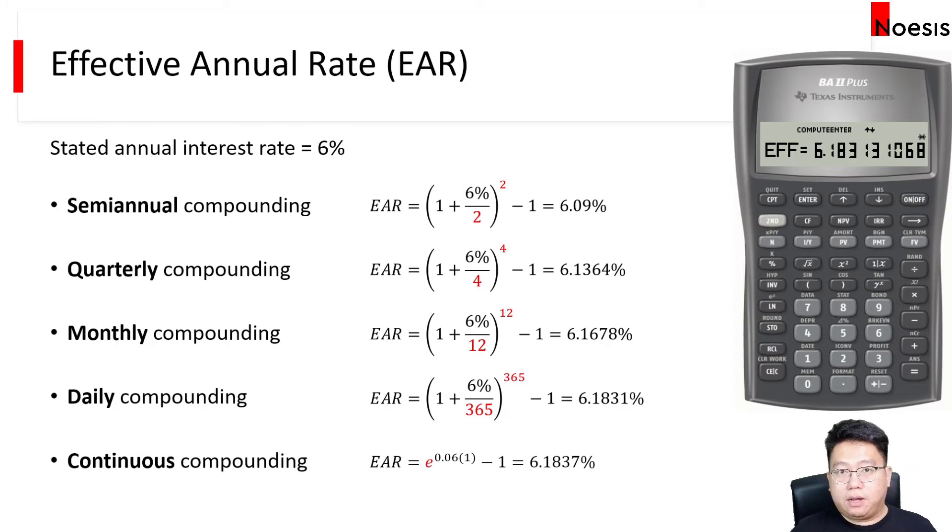Now, for continuous compounding, you can use the formula, which is the exponential of the stated annual interest rate, which is 6% minus 1. Or, of course, if you are using the financial calculator, you just have to assume that the compounding frequency is a very large number.